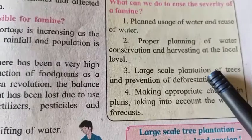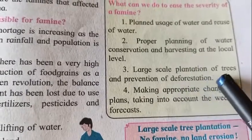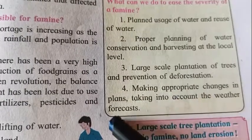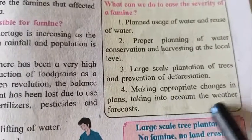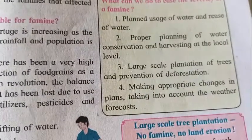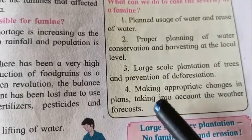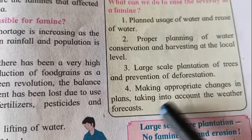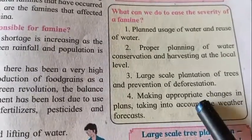Third, large-scale plantation of trees and prevention of deforestation — we must stop cutting trees and grow more crops. Fourth, make appropriate changes in plans taking into account weather forecasts, so that we can adjust our agricultural planning according to predicted weather changes. All these measures help decrease the severity of famine.